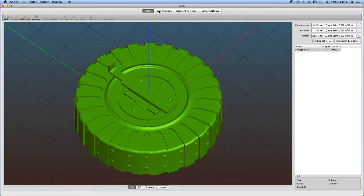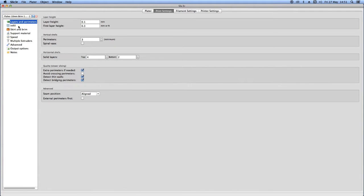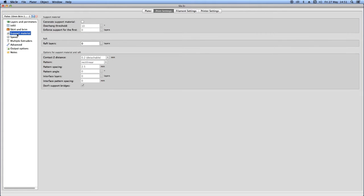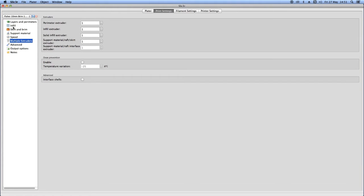This is done in a program called slicing software, which uses predefined settings to convert the 3D model into a G-code file, which then the machine can understand and create the object.